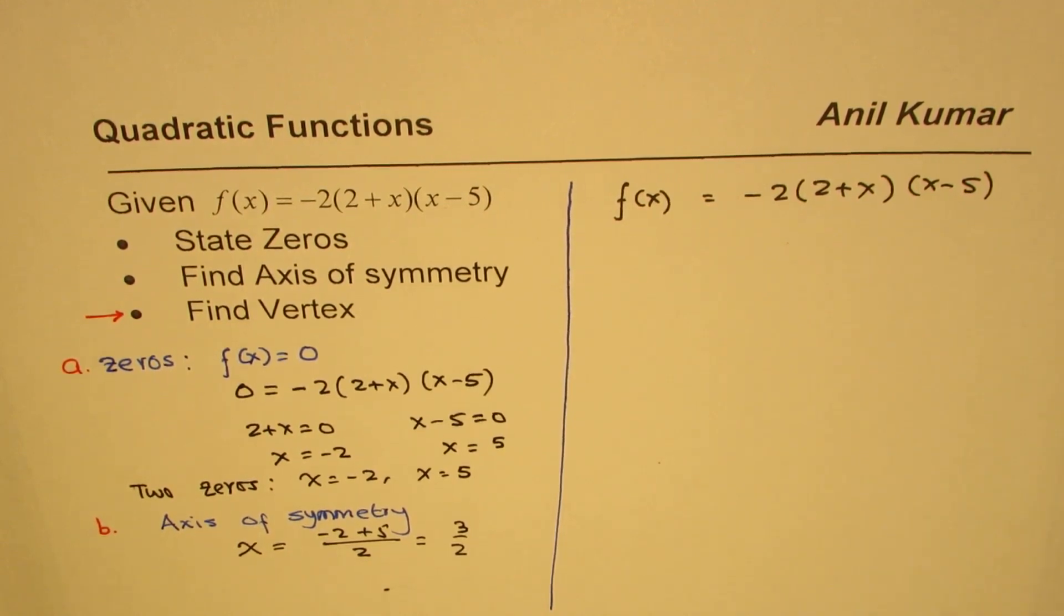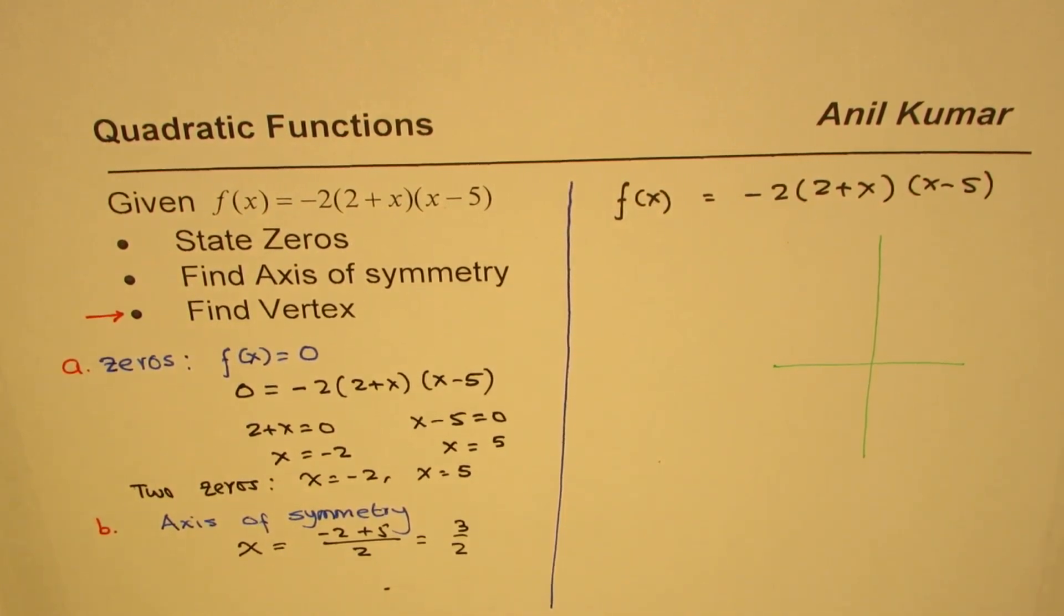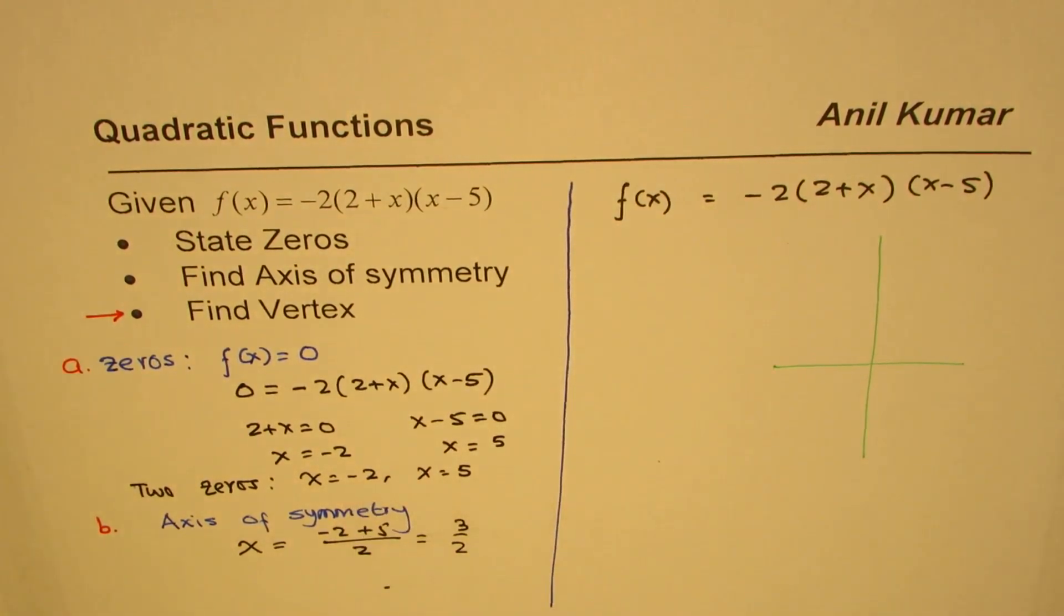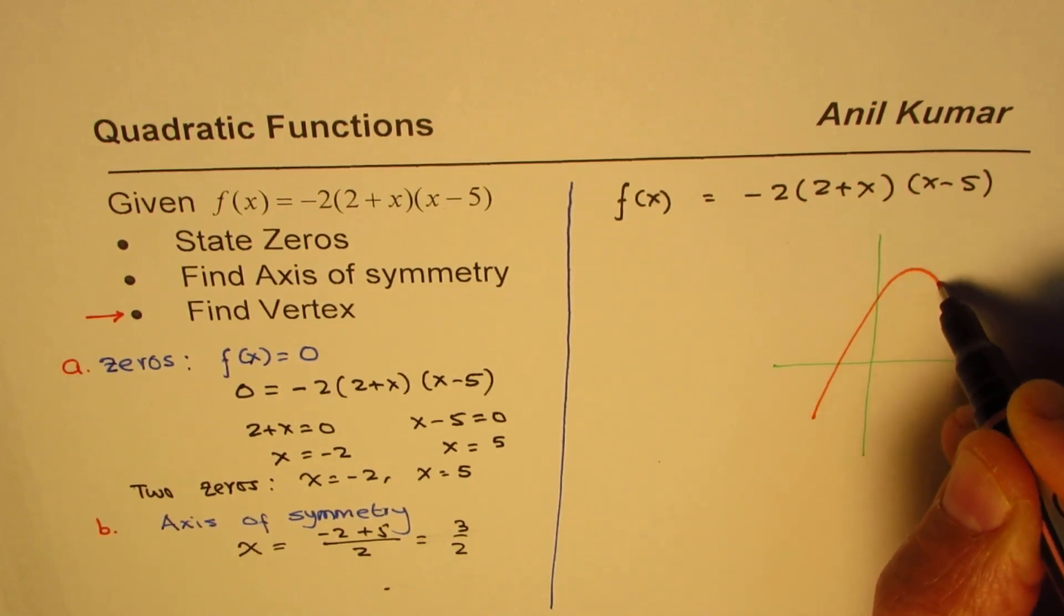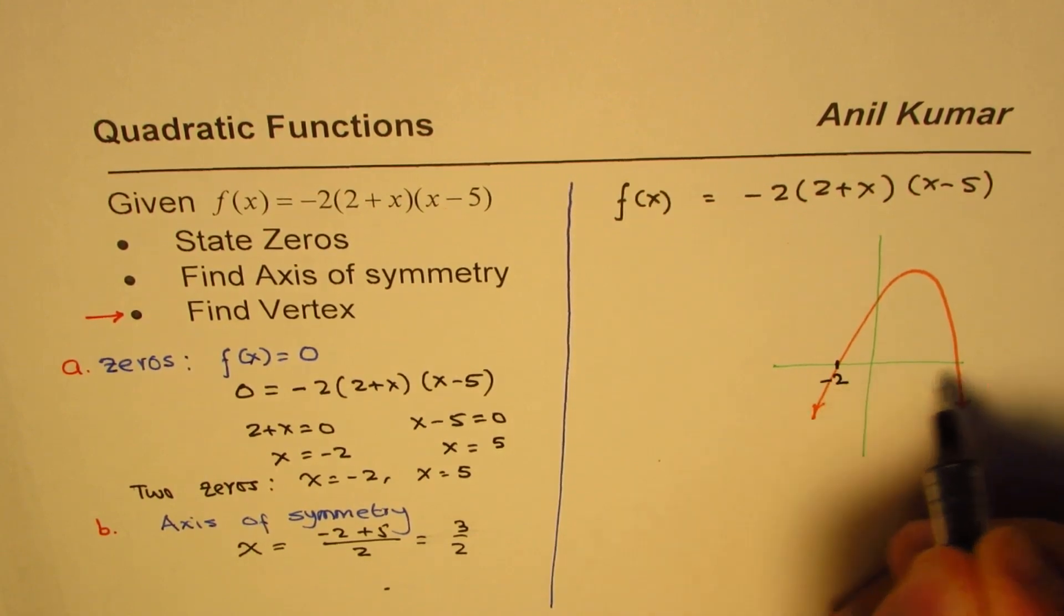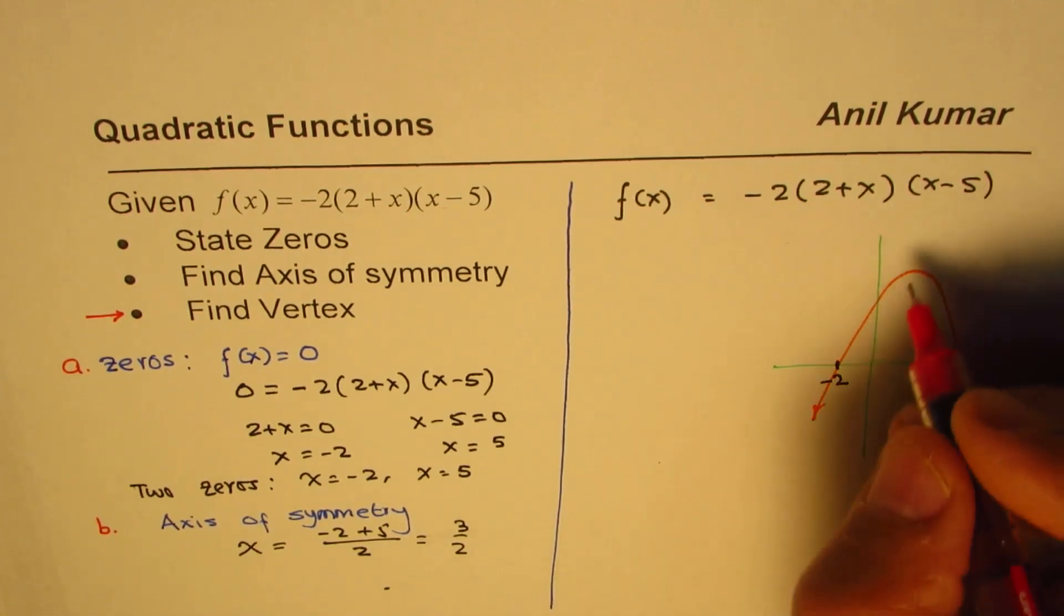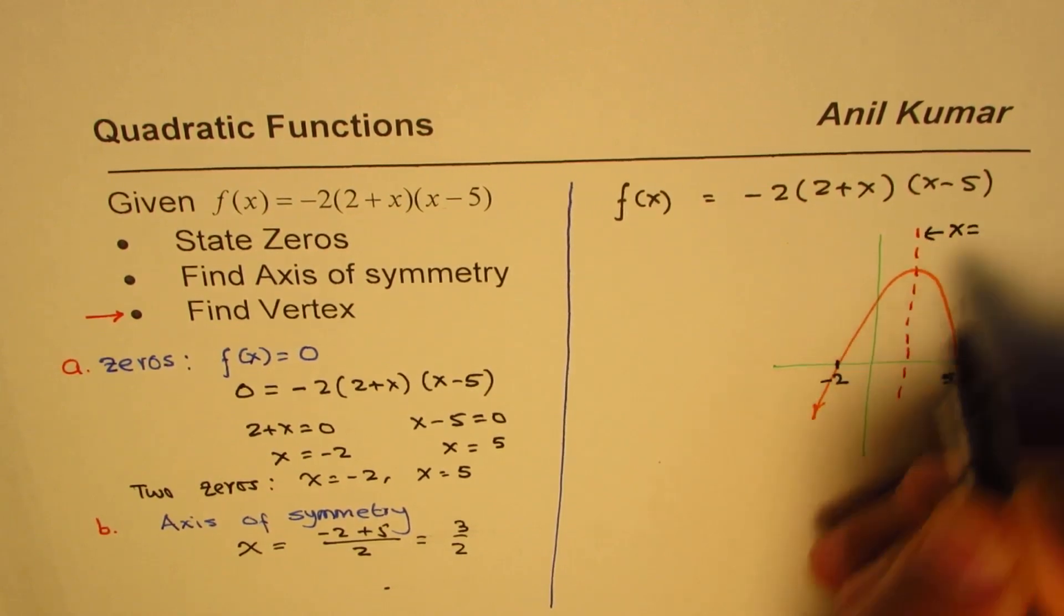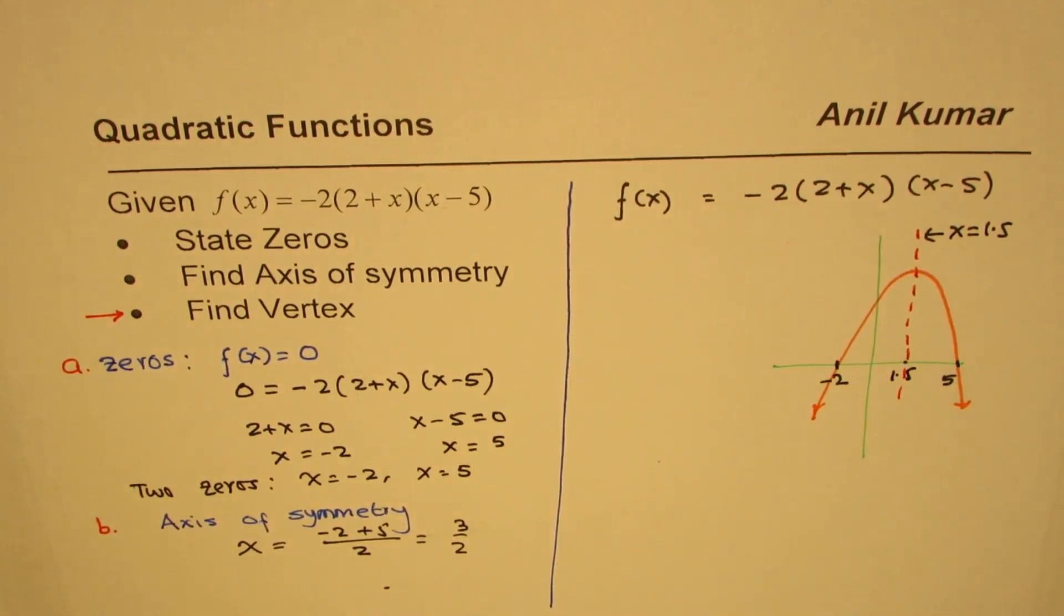Let me sketch this function. Here's a rough sketch as I normally do. We have f(x) = -2 means it opens downwards. Two zeros: one at -2, the other at 5. So approximately this graph is going to be something like this. We are sure about two points: -2 and 5. We are also sure about the axis of symmetry which is x = 3/2 or 1.5.